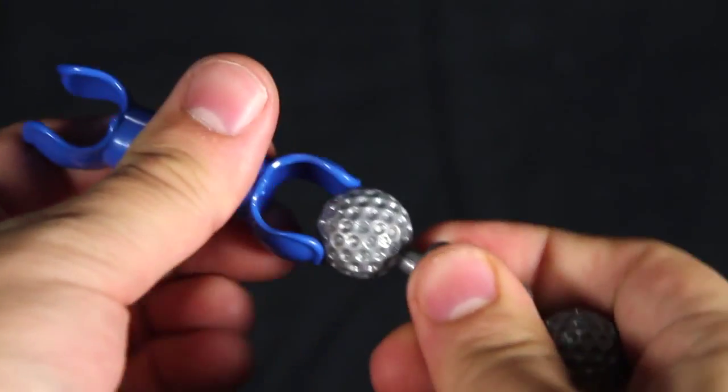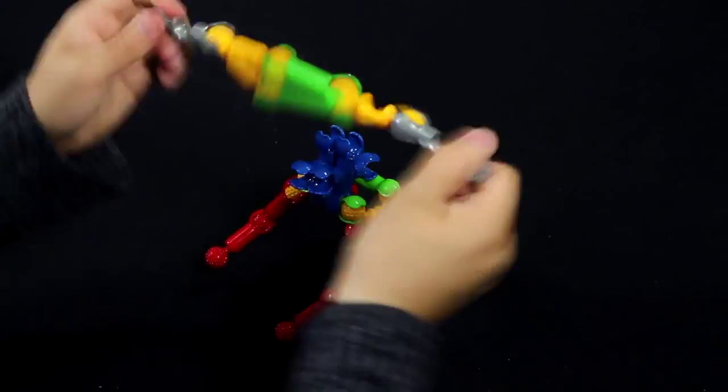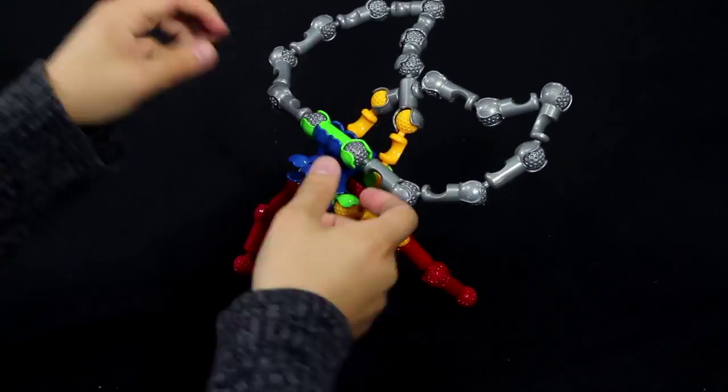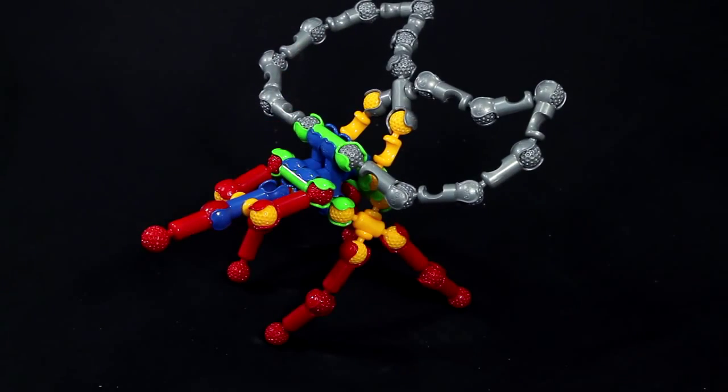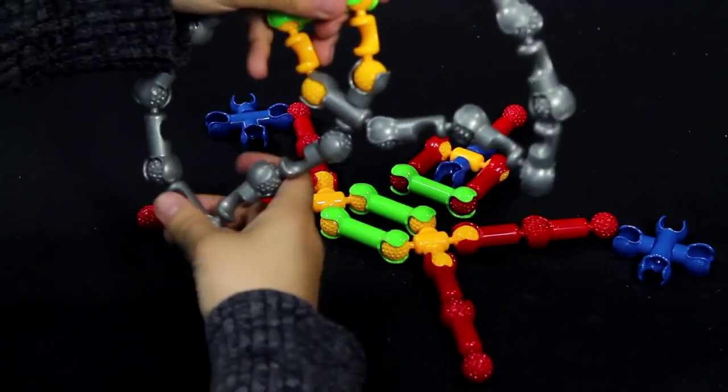ZOOB features pieces that snap, click, and pop together in multiple different ways, making building easy and versatile. ZOOB building sets are unique in that the pieces move after they are put together, so kids can play with their ZOOB creations instead of just looking at them.